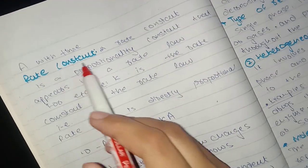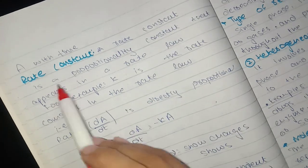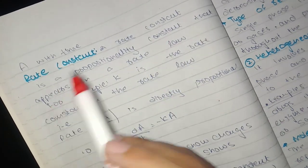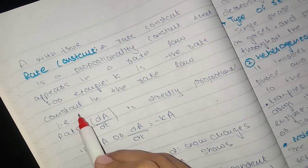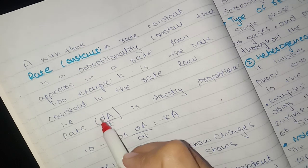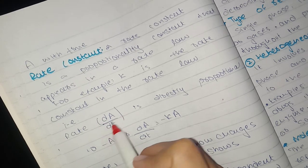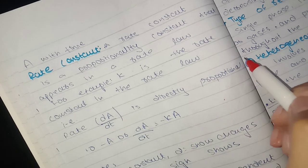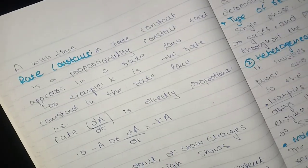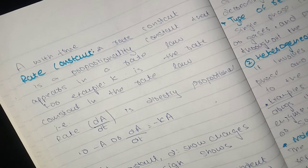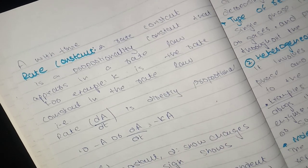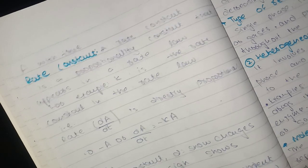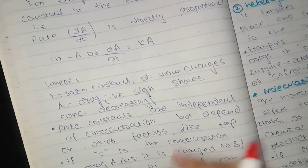A rate constant is a proportionality constant that appears in a rate law. K is the rate constant. Rate equals dA by dt, which is directly proportional. K is the rate constant, dA is the change, and the negative sign shows that concentration decreases with passage of time.